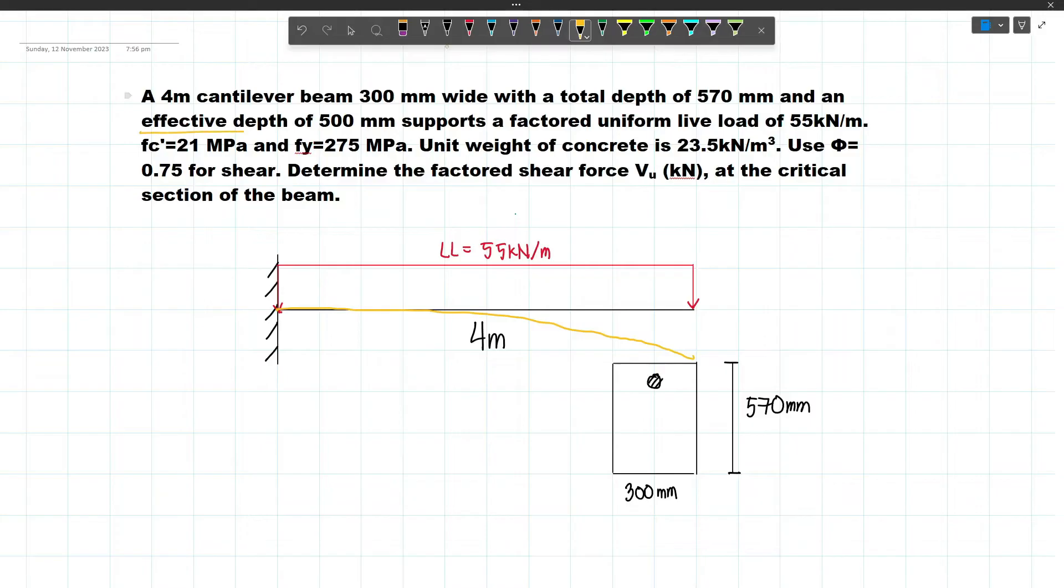What is the effective depth? The effective depth is this distance, measured from the center of the bar up to here. This will be 500mm.